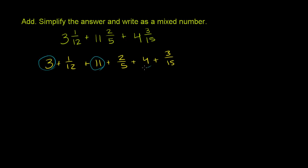So we have 3 plus 11 plus 4. We could think about 3 plus 11 plus 4. And then we can add the fractions. The 1/12 plus 2/5 plus 3/15. So plus 1/12 plus 2/5 plus 3/15.